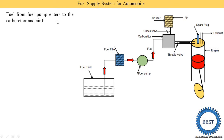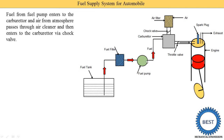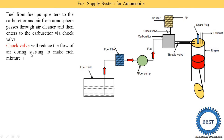Fuel from the fuel pump enters the carburetor — the fuel is first supplied from the fuel tank to the fuel pump, then from the fuel pump to the carburetor. Air from the atmosphere passes through the air cleaner or air filter and then enters the carburetor via the choke valve. The choke valve regulates the amount of air supplied to the carburetor, and will reduce the air flow during starting to make a rich mixture so that the engine will start easily.